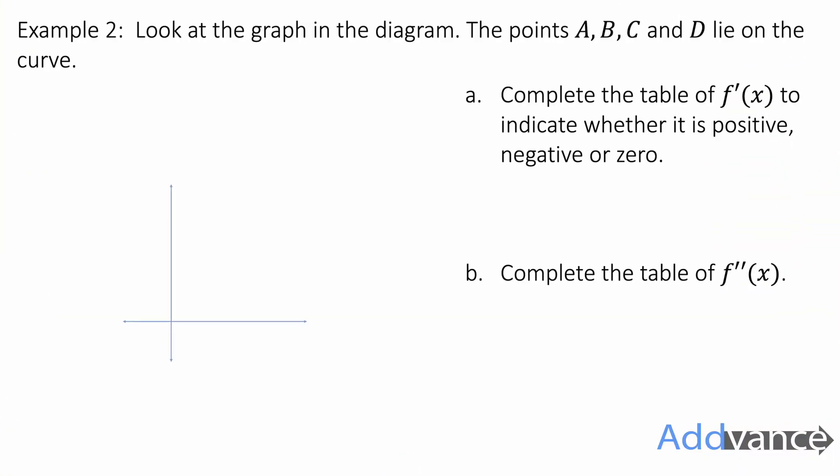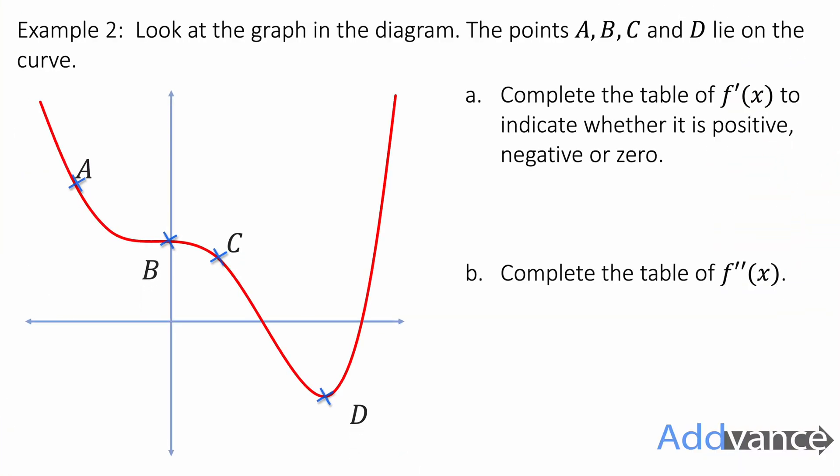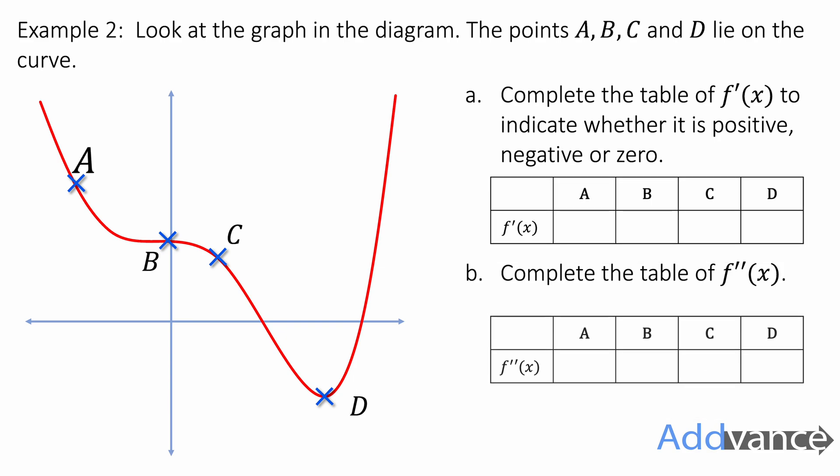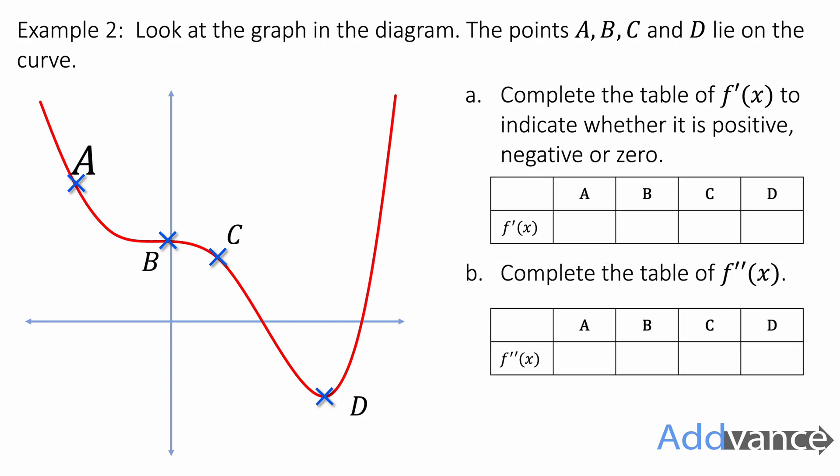Now let's look at Example 2. Look at the graph in the diagram — points A, B, C and D lie on this curve. Complete the table of values for f′(x) to indicate whether it's positive, negative or zero. Then complete the table for f′′(x) to show what the second derivative is — whether it's positive, negative or zero.